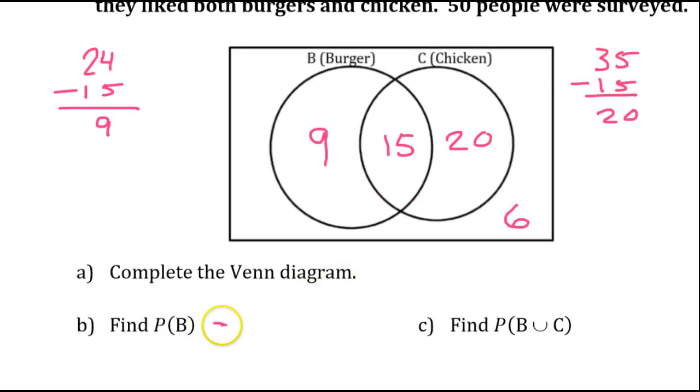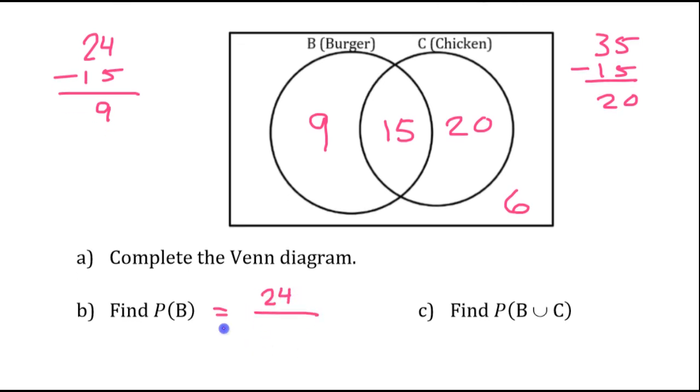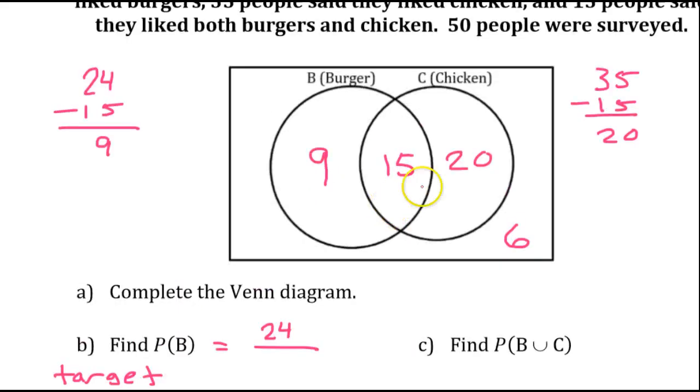So, the probability of B is going to be 24 over something. Anytime we do probability, and that's what P stands for, we're always doing target over total. That's what probability is. Target over total. So, the target is the B, which is 24. Now, the total is the total number of people surveyed. That was 50. So, 24 out of 50.